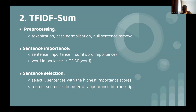TF-IDF Sum is also very intuitive. Sentence importance is a function of word importance — a word is important if it has a high TF-IDF score, and sentence importance is the sum of TF-IDF scores of all words in the sentence. You then select the highest-scoring K sentences as the summary, reordered by order of appearance to make a coherent summary.